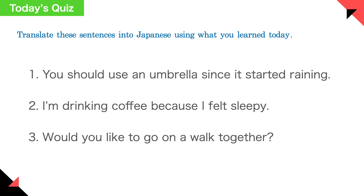Alright, today's quiz! Translate these sentences into Japanese using what you learned today. Number one: You should use an umbrella since it started raining. Number two: I'm drinking coffee because I felt sleepy. Number three: Would you like to go on a walk together? I'll leave the example answers in the description.